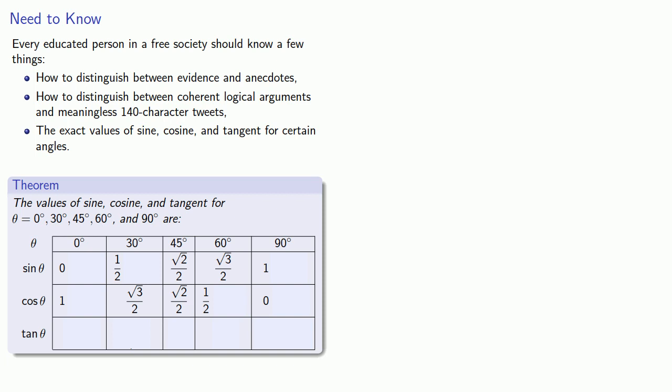Now, there are several noteworthy patterns in this table, and one thing we can do to make these patterns more clear is to rewrite all of our numbers in a similar format. Notice that many of these numbers are over 2, and many have square root of something in them.